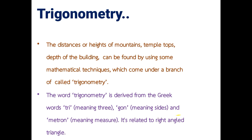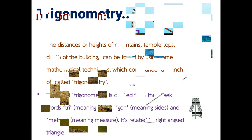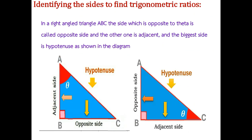The word trigonometry comes from a Greek word which means three sides and measurement. It is related to right angle triangle measurement. As you can see in this diagram, this is a right angle triangle. If you want to find the height of this light pole or the distance between the light pole and the board, you can use techniques that come from this branch of mathematics.